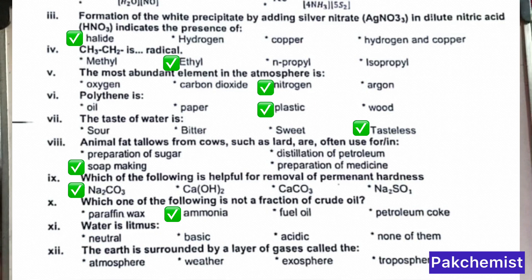MCQ 9 (water litmus): Water is neutral on litmus paper. MCQ 12: The earth is surrounded by a layer of gases — what is it called? It is called the atmosphere.